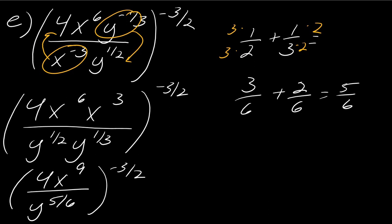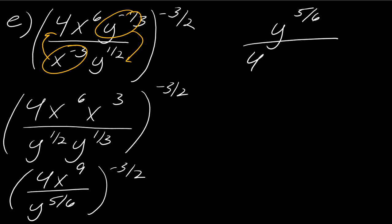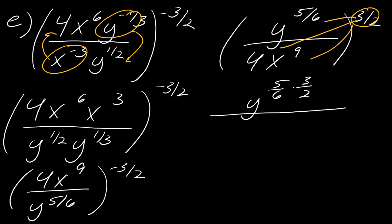Okay, so let me clear some space. The next thing is I want to get rid of the negative exponent. So I'm going to flip everything. So this becomes y to the 5, 6 over 4x to the 9th. And then now this is to the positive 3 halves. And now I can work on applying this exponent to all the parts of the problem, right? So this will be y to the 5, 6 times 3 over 2, 4 to the 3 halves, and then x to the 9th times 3 over 2.